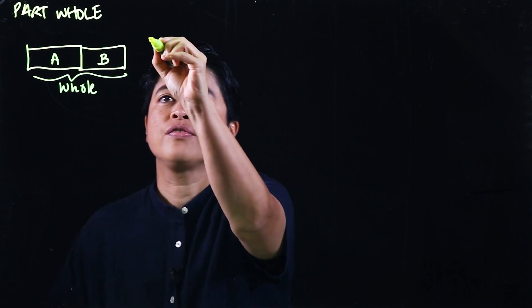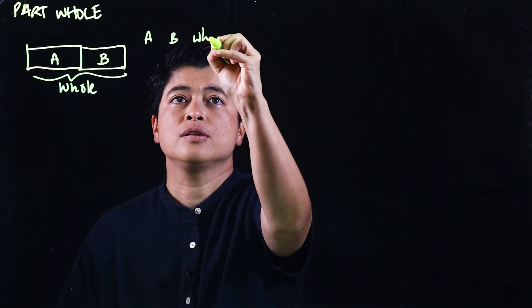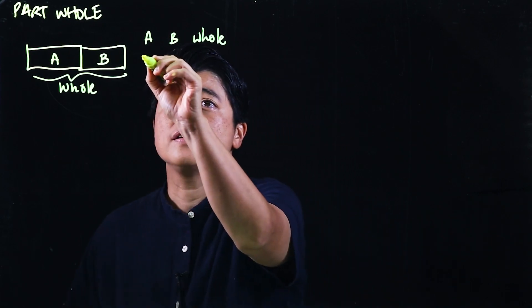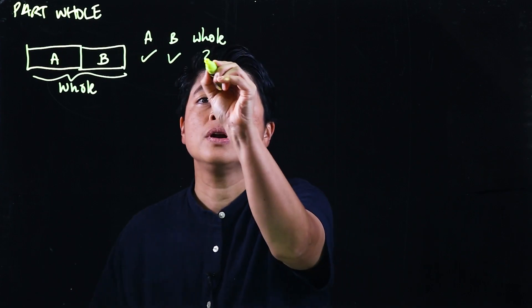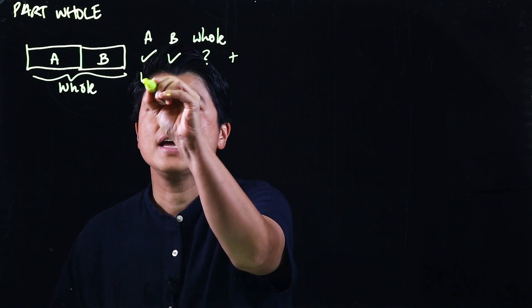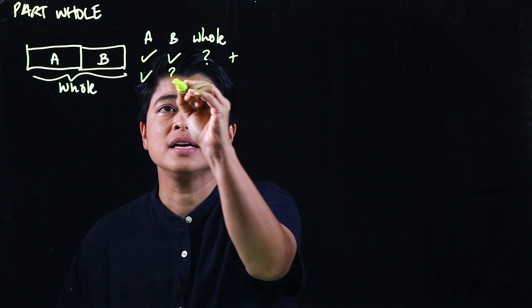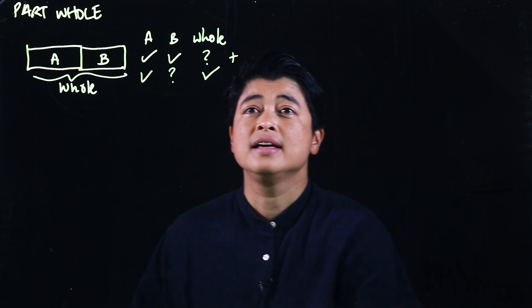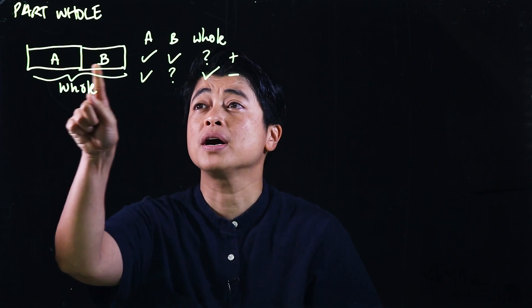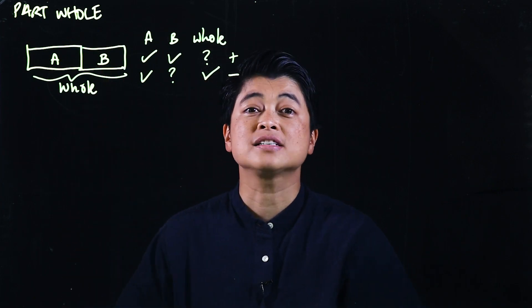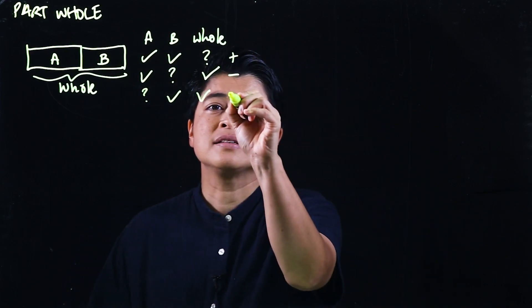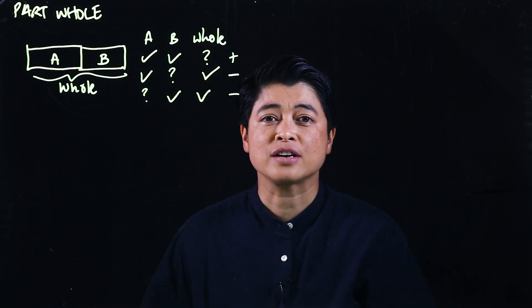This is how we should teach kids: if A and B are given and the whole is unknown, this is an addition problem. If A is given, B is unknown, and the whole is given, this is a subtraction problem. The logic is: if a part is missing, that's subtraction.